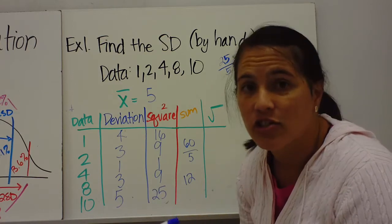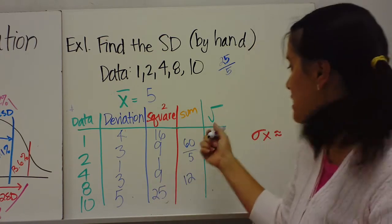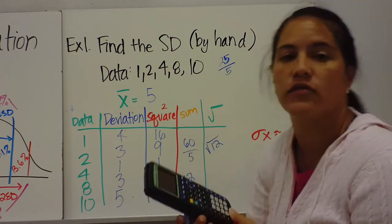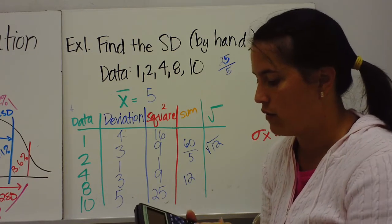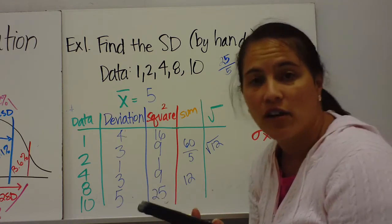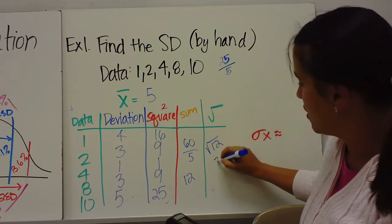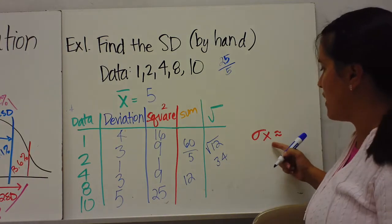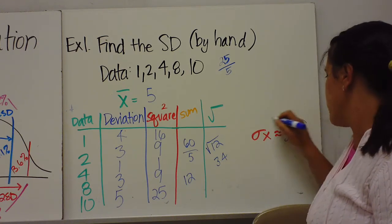The last step is to take the square root of 12. Typing that into the calculator gives about 3.4. So the standard deviation is approximately 3.4.